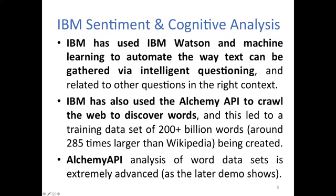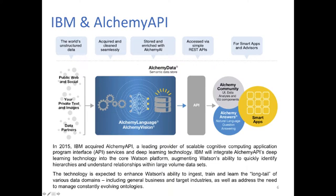IBM continues to update that dataset on a regular basis, so the Alchemy API analysis of word datasets is very advanced, as you'll see in the demo later. The Alchemy API system can take sources of data from the public web, social data, private text and images, and data sources from public or other companies, processing it through Alchemy Language and Alchemy Vision, then output it through an API.